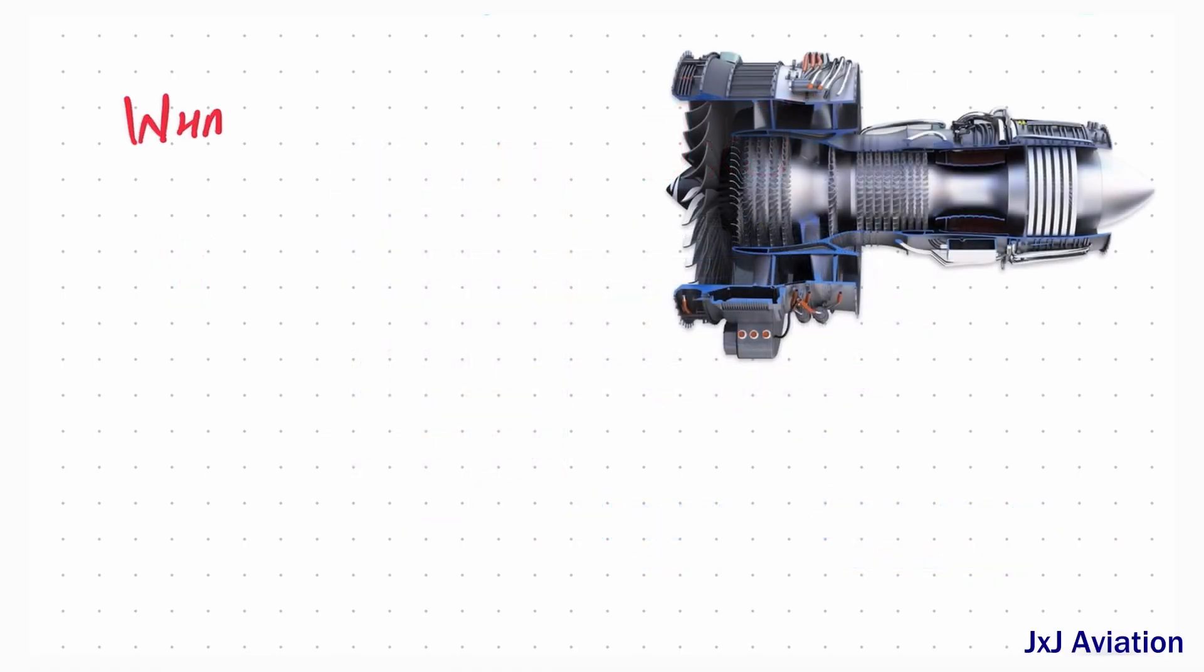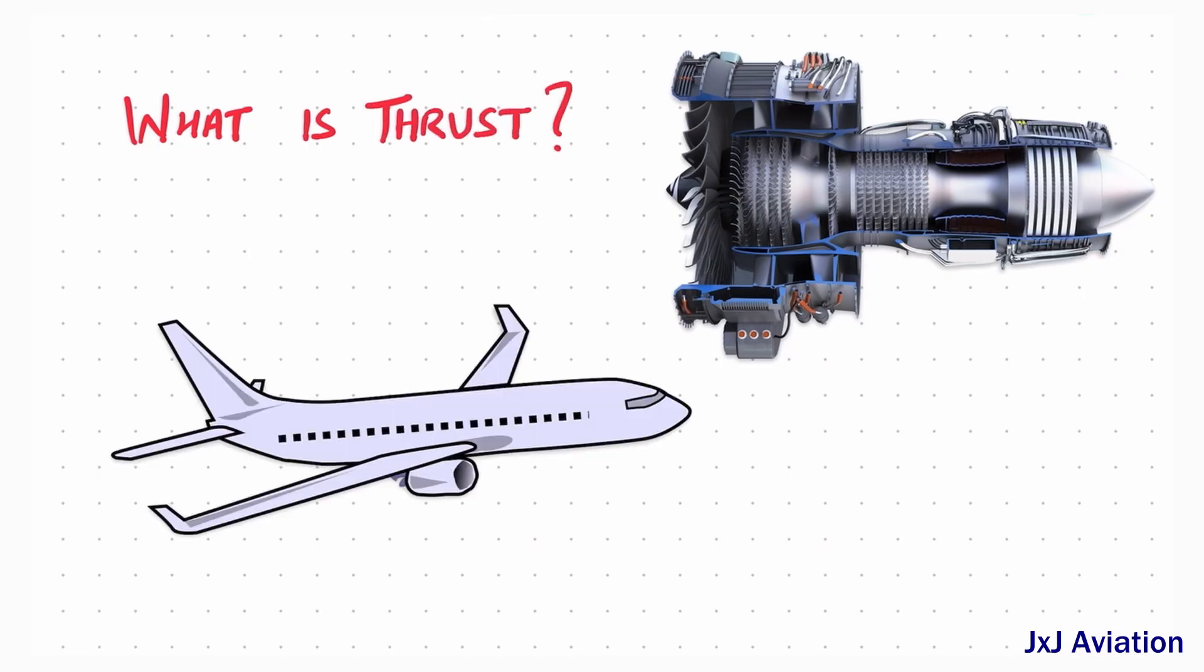First, let's look at what is thrust. Thrust is a force which causes an aircraft to move forward. The thrust is generated by the engines by accelerating a mass of gas. The gas is accelerated towards the exit, which causes the engine and the aircraft to start moving in the forward direction.